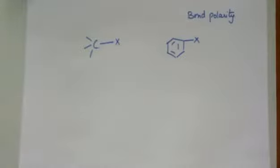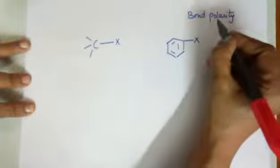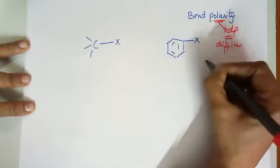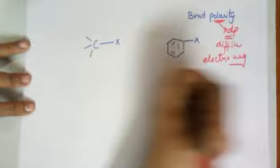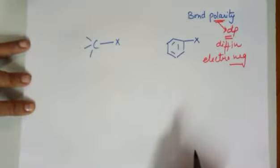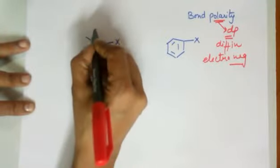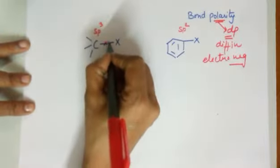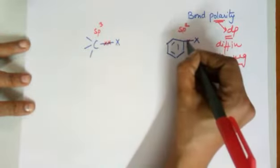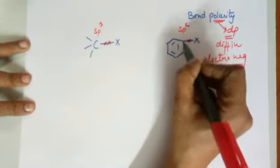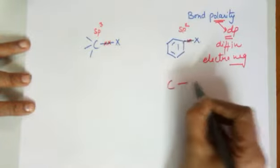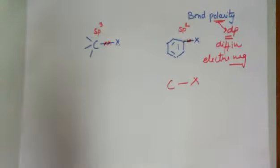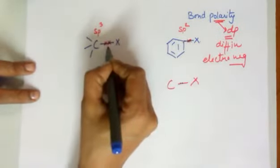Coming to the second parameter — bond polarity. Polarity refers to the dipole moment or the difference in electronegativity. For comparison, let the halogen be Cl in both cases. In haloalkane, the carbon has sp3 hybridization, while in haloarene the carbon has sp2 hybridization. The shared pair of electrons between C and X in the aryl halide would be slightly more towards the carbon because that carbon has higher s-character and becomes more electronegative.